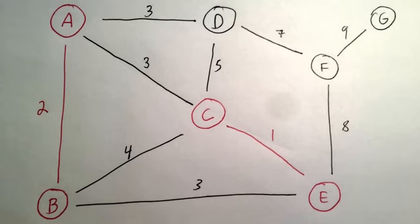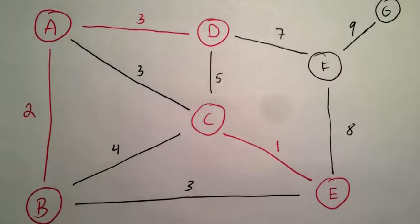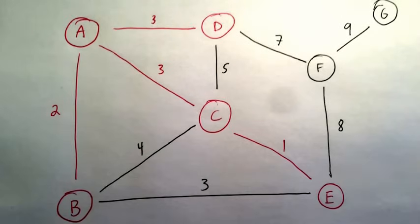Let's keep looking for the smallest edge in the edge list. Notice there are three edges with a weight of 3. You can choose any one of these edges. I have chosen to add edge AD to the minimum spanning tree. Continuing in the same manner, edge AC gets added to the MST.